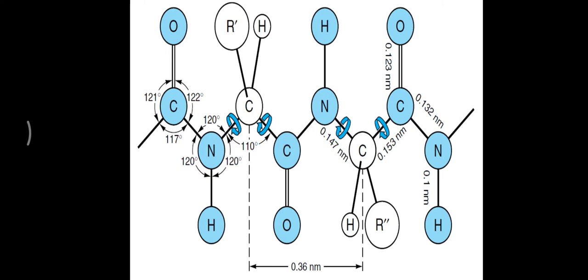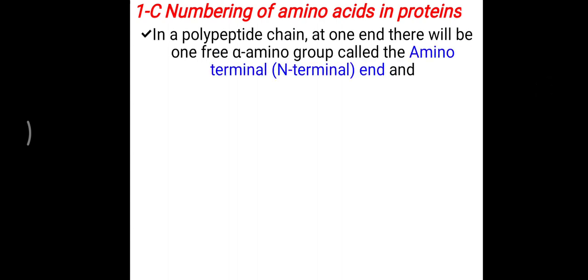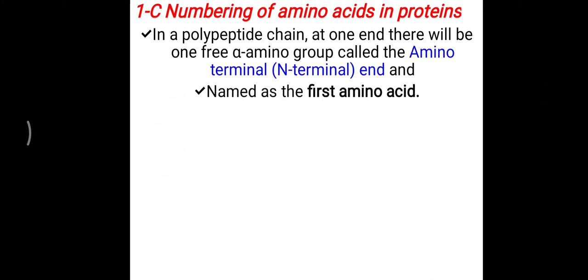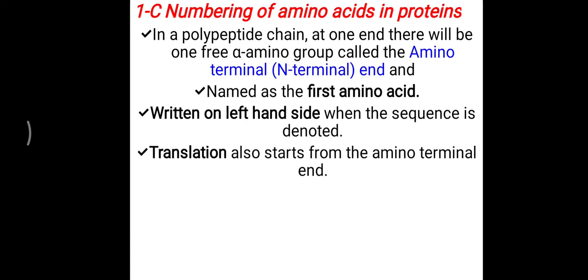In the primary structure, you also need to remember the numbering of amino acids in the protein. In a polypeptide chain, at one end there is a free alpha-amino group called the amino terminal — also called N-terminal. This N-terminal is the first amino acid in the protein and is generally written on the left-hand side when the sequence is denoted. During translation, protein synthesis also starts from the amino terminal, showing the first amino acid.